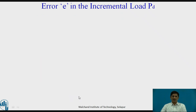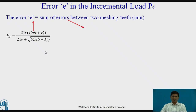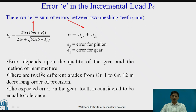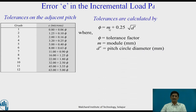Effective load in that case is given as CS × PT plus the dynamic load. Error E depends on the sum of error between pinion and gear, given as EP plus EG, where EP is error in pinion and EG is error in gear. This error depends on the quality of gear and method of manufacturing. Twelve grades 1 to 12 are available in decreasing order of precision. The expected error on the gear tooth is considered equal to tolerance. For grade 1, error equals 0.8 plus 0.06 phi, where phi equals M plus 0.25 × √D', and D' is the pitch circle diameter. As we do not know this in early stages of gear design, we cannot calculate dynamic load using Buckingham's equation and need to calculate using velocity factor.